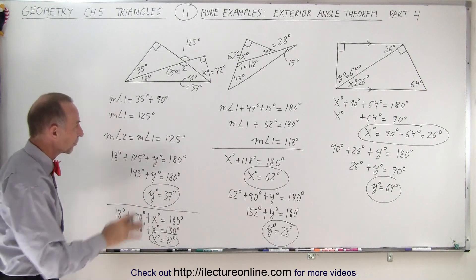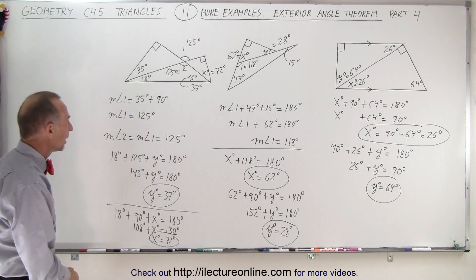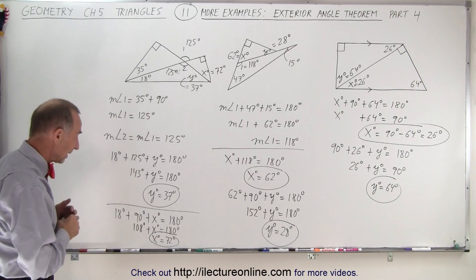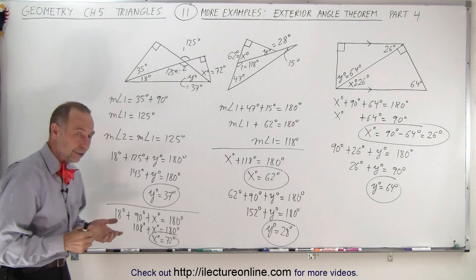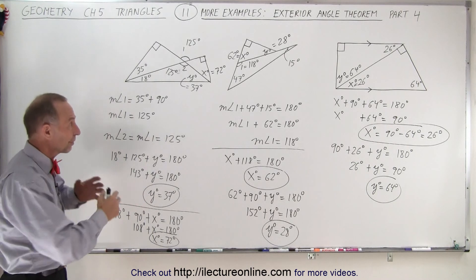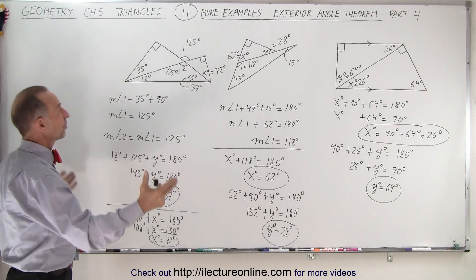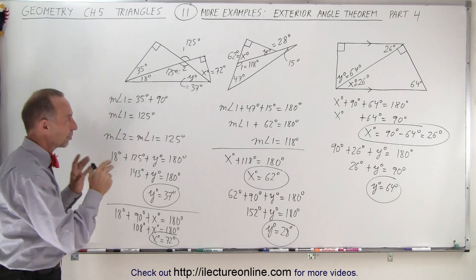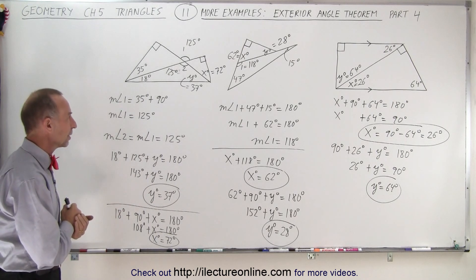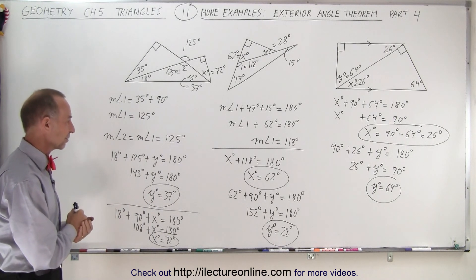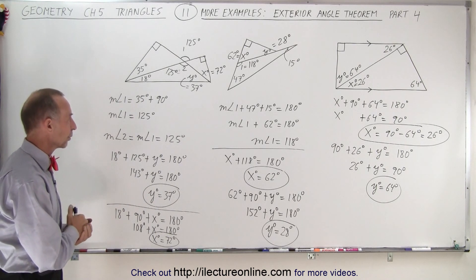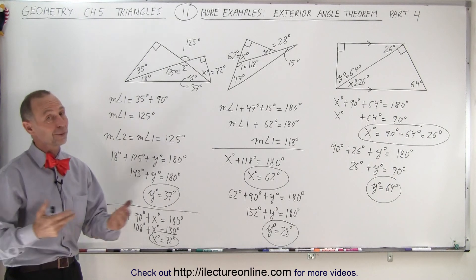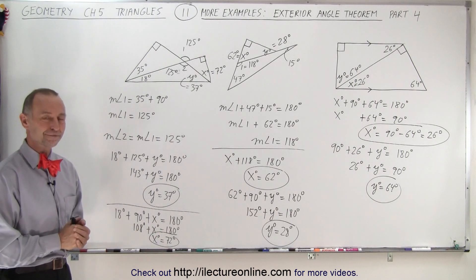And now we've found all the values for x and y in each of these sets of triangles. You could probably find 10 different ways to solve these types of problems. As long as you stick to the rules, you should be able to get through these and find all the x and y values. And that is at least one example of how it's done.